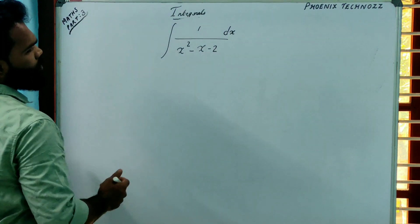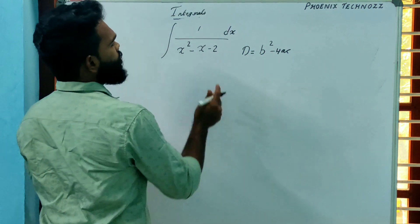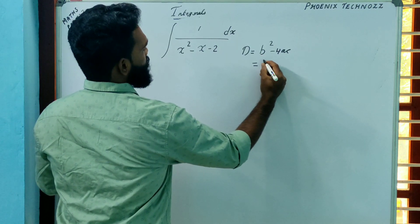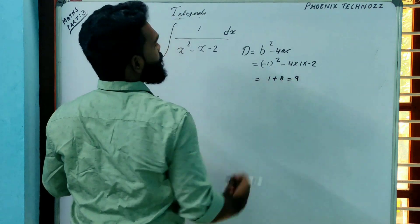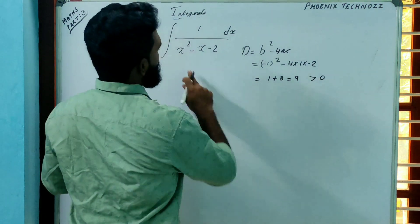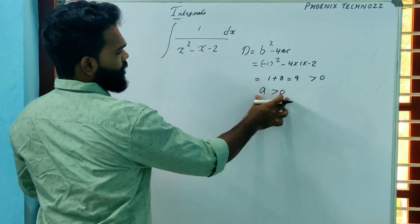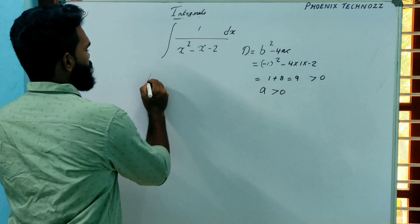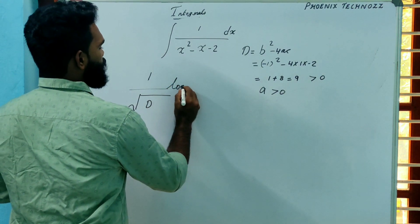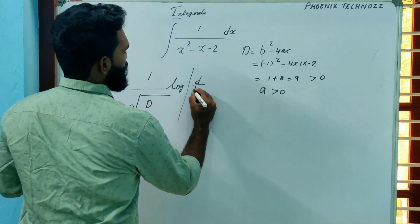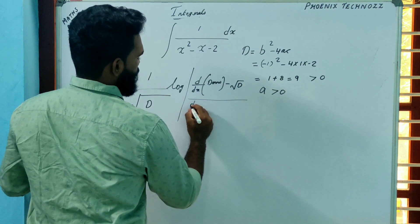For x²−x−2, we find the discriminant: D = b²−4ac = (−1)²−4(1)(−2) = 1+8 = 9. Here b²−4ac is greater than 0 and the coefficient of x² (that is a) is also positive. If b²−4ac > 0 and a > 0, the shortcut is: 1 divided by √D, into log of the modulus of [(derivative of denominator − √D) divided by (derivative of denominator + √D)], plus C.